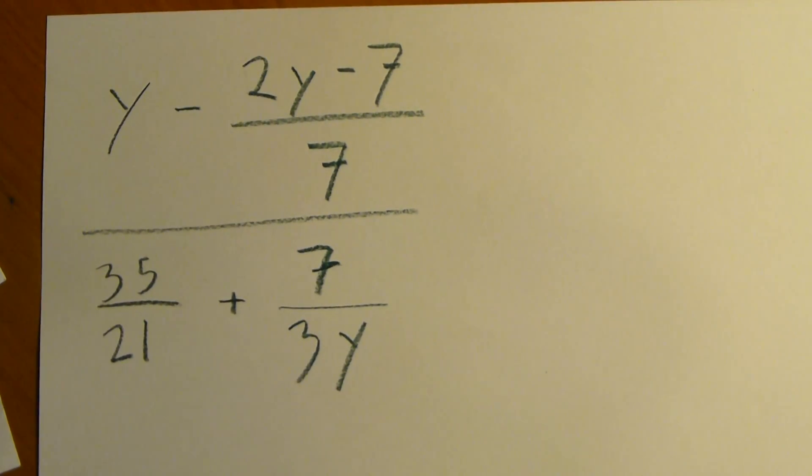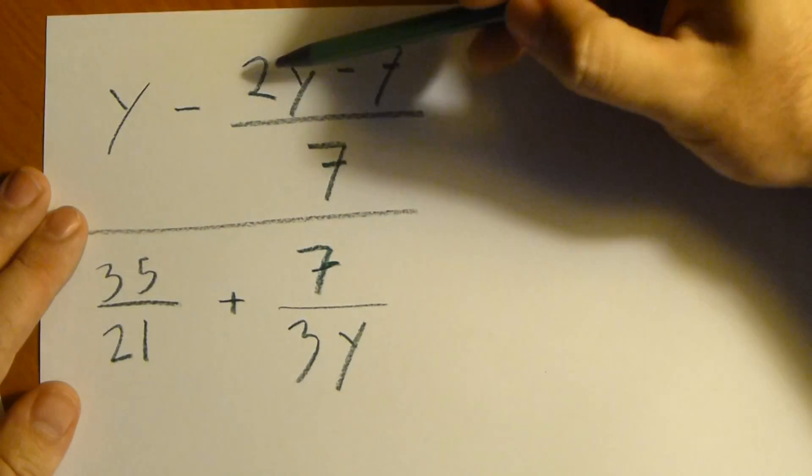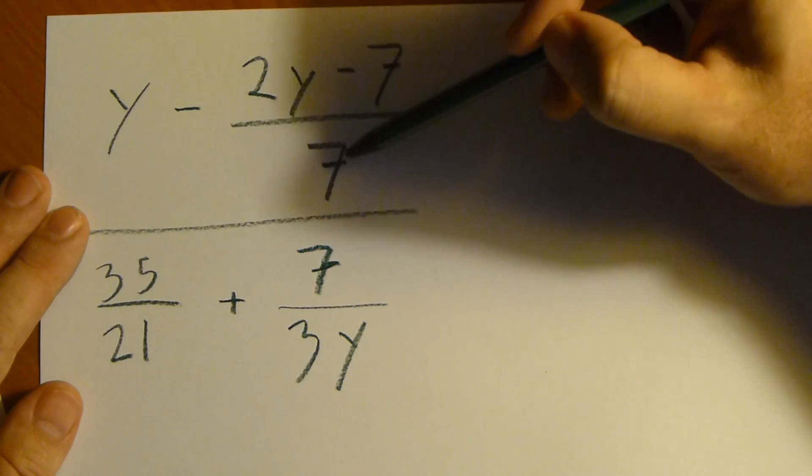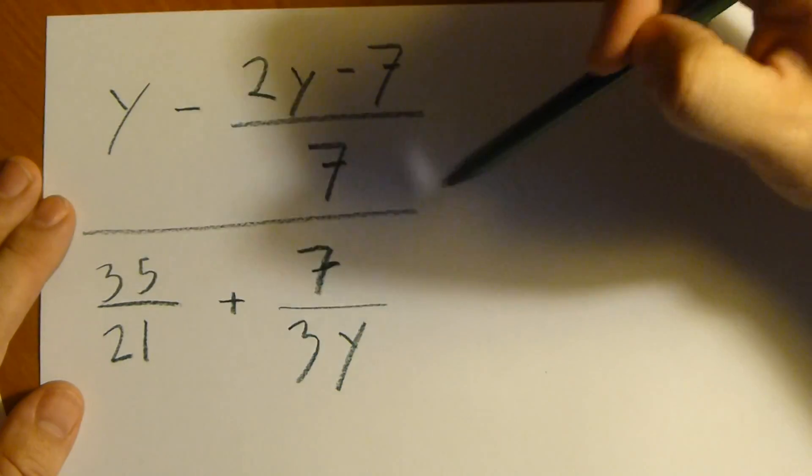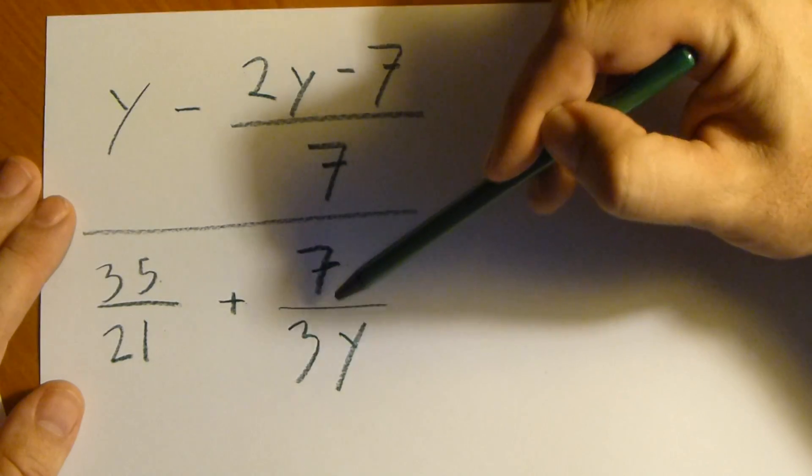Okay, in this video we're going to look at how to simplify a nested fraction. Here we have y minus 2y minus 7 over 7, over 35 over 21 plus 7 over 3y.